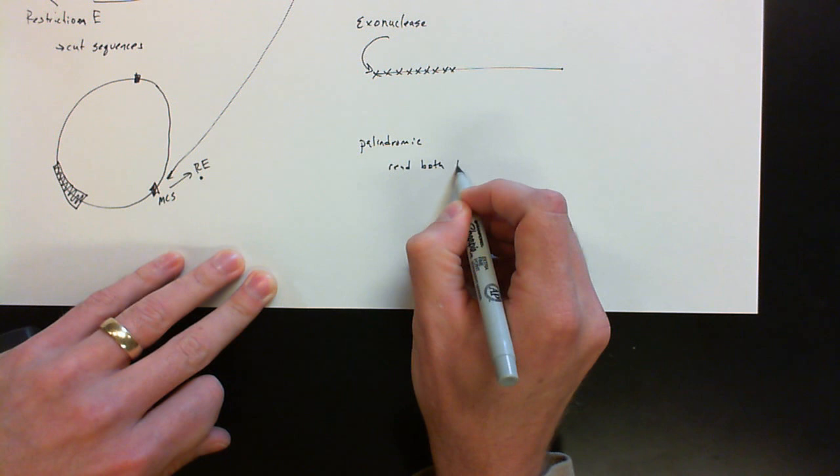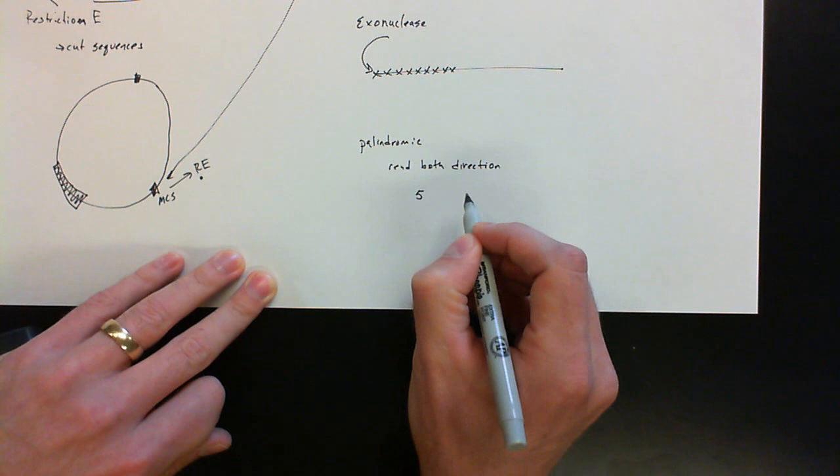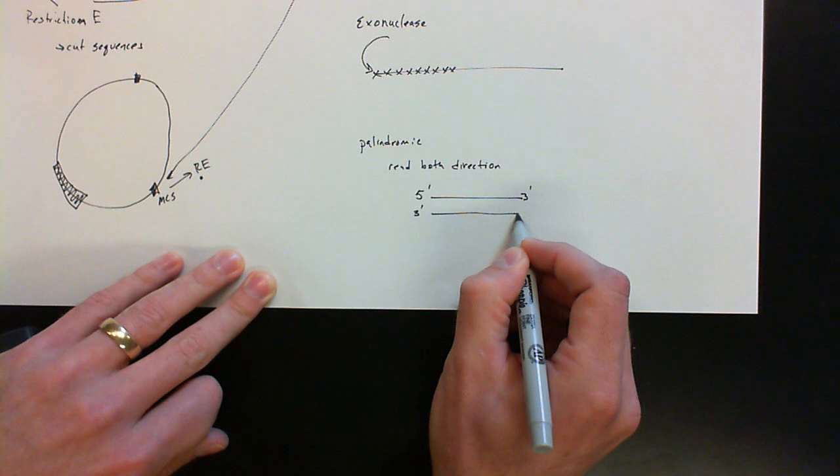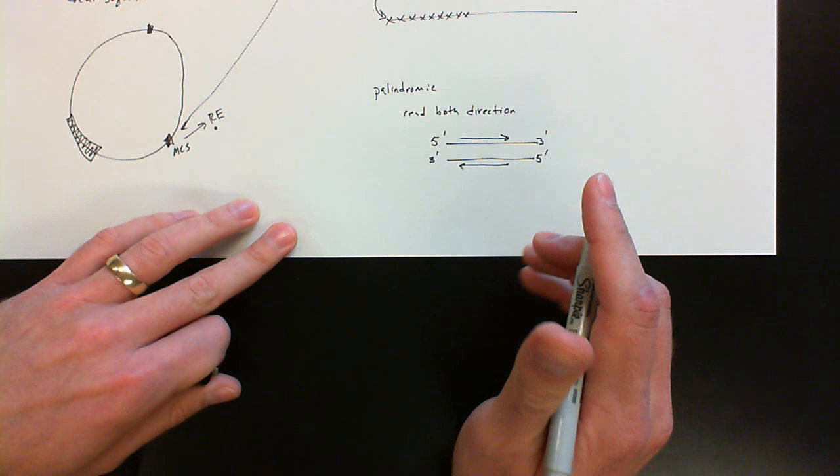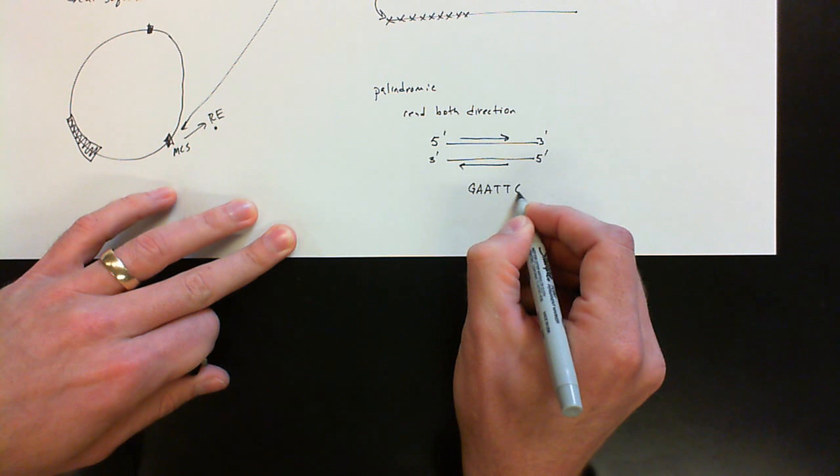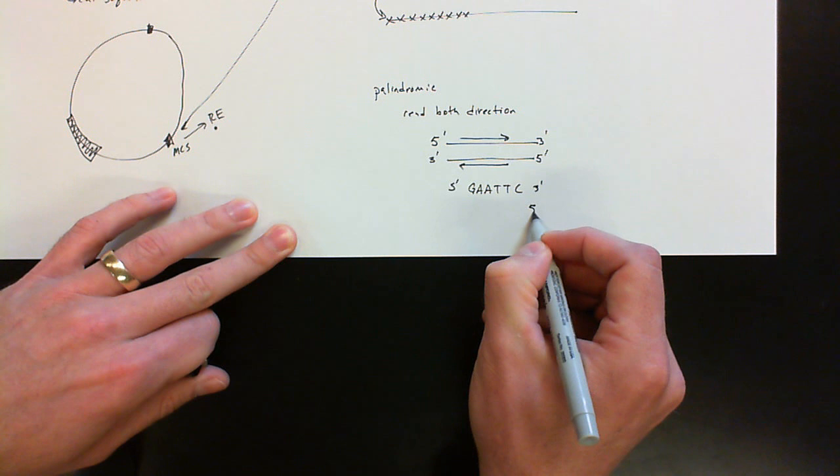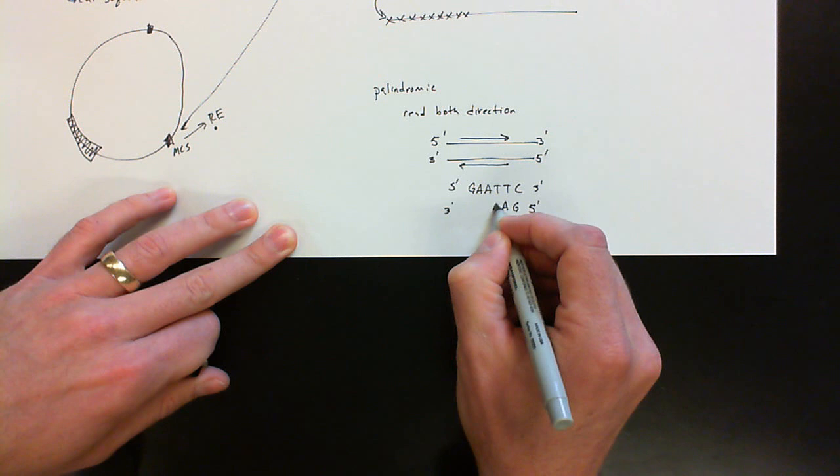In DNA, this is referring to the two strands. So remember, DNA has a 5' side and a 3' side. And on the other strand, it's opposite of that. We call that anti-parallel. So what we're saying is it can be read in one direction on the top strand, and it's the same on the second strand. So an example of a palindromic sequence in terms of DNA is G-A-A-T-T-C. So if I put my 5' here and my 3' here on the opposite strand in the 5' to 3' direction, it's going to be G-A-A-T-T-C.